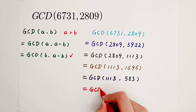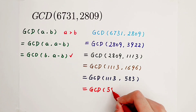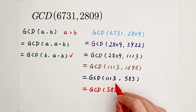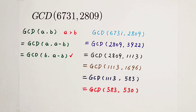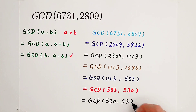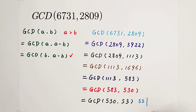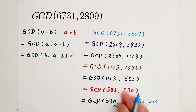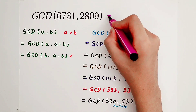It is the GCD of 583 and the subtraction of these two numbers, which is equal to 530. Now it is the greatest common factor of 530, and the subtraction: 583 minus 530 is 53. And we're done. Why? Because 53 divides 530 — 530 is 10 times 53. When one of the numbers divides the other, we stop. So the greatest common divisor of these two original numbers is 53.